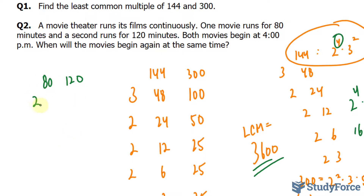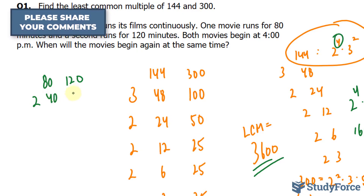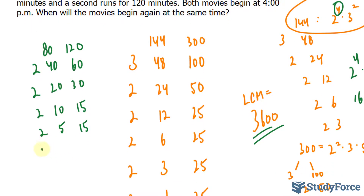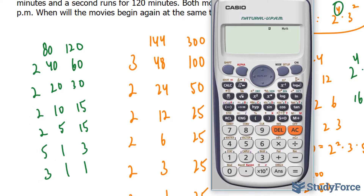Writing down 80 and 120: both are divisible by 2, giving 40 and 60. Again by 2: 20 and 30. Again by 2: 10 and 15. Again by 2: 5 and 15. Then by 5: 1 and 3. Then by 3: 1 and 1. So the LCM is 2 × 2 × 2 × 2 × 5 × 3, which is 2 to the power of 4 times 5 times 3 = 240.